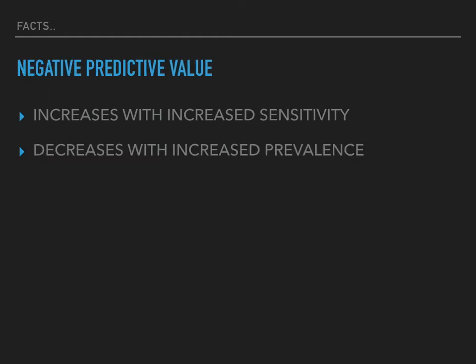The negative predictive value increases with increased sensitivity. A way to not mix them up in a stressful situation: notice there's an N in sensitivity but no N in specificity. So the N in sensitivity reminds you that it has a proportional relationship to negative predictive value. Also remember that negative predictive value decreases with increased prevalence — the higher the prevalence, the lower the negative predictive value will be.